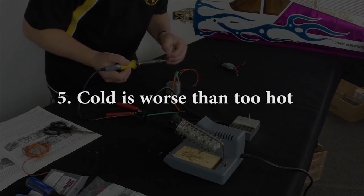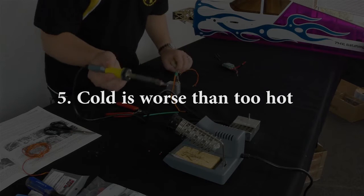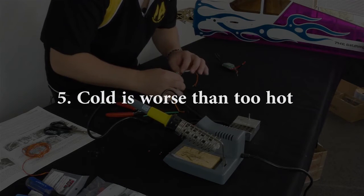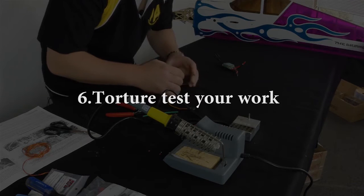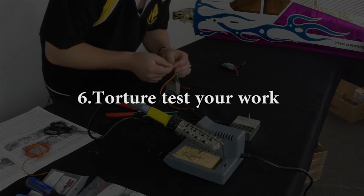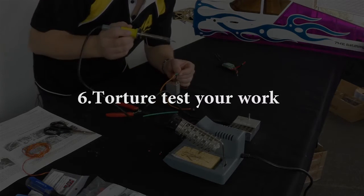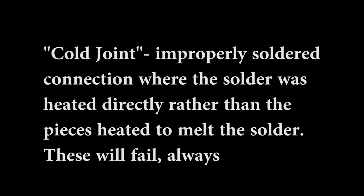Five, don't be afraid to crank that iron up. A cold iron will require more time on the piece, allowing the wire to dissipate the heat down its length. This is fighting a losing battle. And six, finally, give your finished connections a good tug to test their integrity and expose any failure prone cold joints. Their appearance isn't always enough to pick them out.